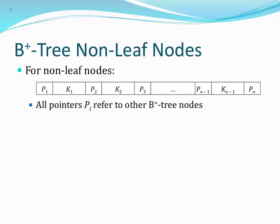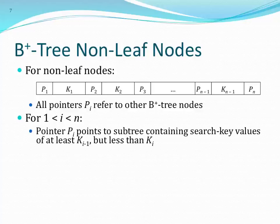Non-leaf nodes: since keys and pointers correspond to each other, they allow us to select a subtree that will contain the value we're looking for. P sub i points to a subtree containing search key values of at least K sub i−1 and less than K sub i. So if the value we're looking up is less than K1, we follow P1. If it's at least K1 but less than K2, we follow P2. If it's at least K2 but less than K3, we follow P3. It's just like a binary tree except we're narrowing it down by much more than half each time.